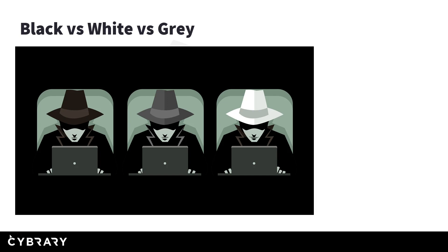Black hat versus white hat versus gray hat — you'll see gray spelled with an E or with an A depending on the source. A black hat is our criminal hacker — there's usually financial motivation and they don't care who they're harming. A gray hat is in between: generally a good hacker, but they might touch systems they don't have permission to. One example from the media was a gray hat who noticed home routers were vulnerable, wrote a script to fix the issue, and pushed it out on the internet — the intent was good, but technically without permission from the owners. A white hat, or ethical hacker, or penetration tester, is a hacker who has permission to actually get into the system.